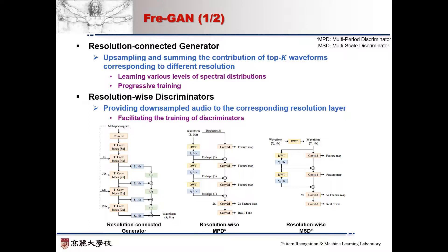FrGAN is based on generative adversarial networks. The generator takes a mel spectrogram and upsamples it until the resolution of the output sequence matches that of the raw waveform. The generator samples and sums top-k waveform outputs from different resolutions. This structure can learn various levels of spectral distribution by summing multiple waveforms at different scales.